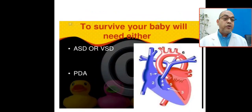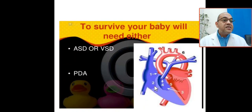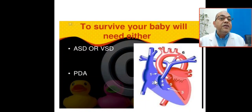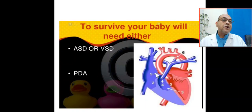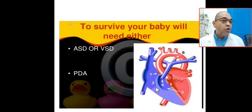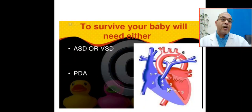Tricuspid atresia is associated with underdevelopment of the right ventricle. Since there is no communication between the right atrium and right ventricle — because the tricuspid valve is absent — the baby must survive through either an ASD, which decreases pressure in the right atrium and allows blood to go to the left atrium creating mixing, or through a VSD, or through a PDA. One of these shunts is needed to keep the baby alive.